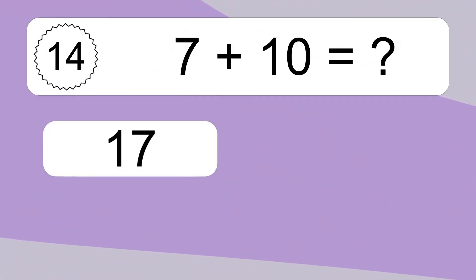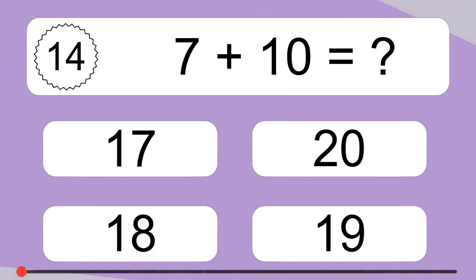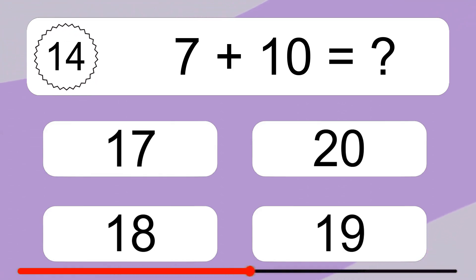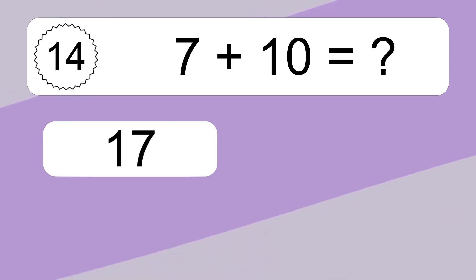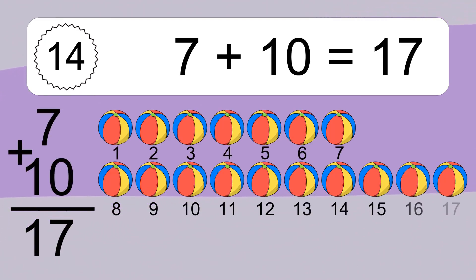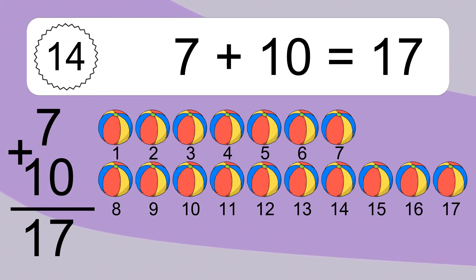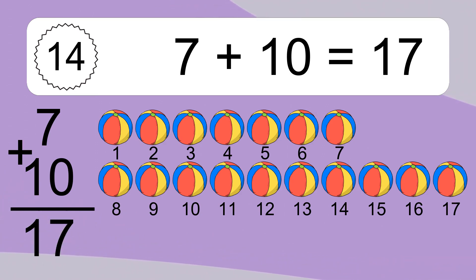7 plus 10 equals what? Let's count it: 1, 2, 3, 4, 5, 6, 7, 8, 9, 10, 11, 12, 13, 14, 15, 16, 17.